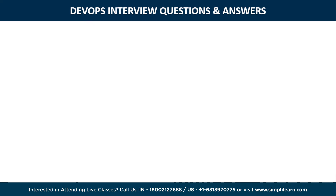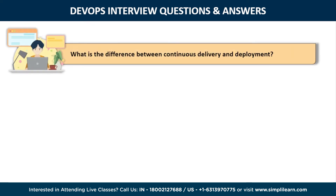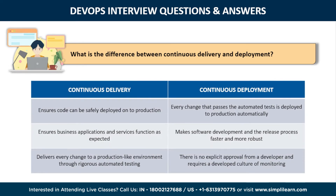The third question is: what is the difference between continuous delivery and continuous deployment? Continuous delivery ensures that you can safely deploy onto production, but continuous deployment ensures that every change that passes through automated testing is deployed to production automatically instead of manually. Continuous delivery ensures business applications are delivered as expected, while continuous deployment makes software releases smooth and faster. Continuous delivery makes changes to a production environment through rigorous automated testing, whereas with continuous deployment, no explicit developer approval is required.